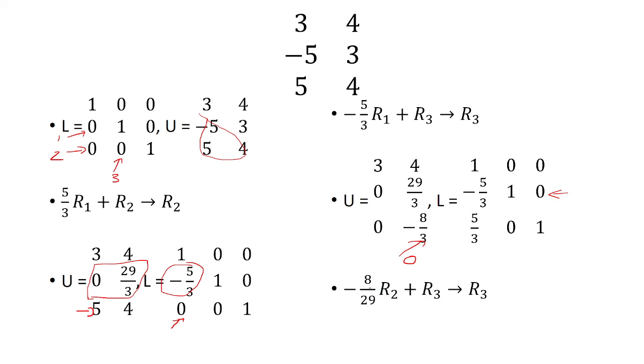So what do we do? We multiply row 2 by negative 8 over 29, and then add it to row 3. That's going to be my new row 3.